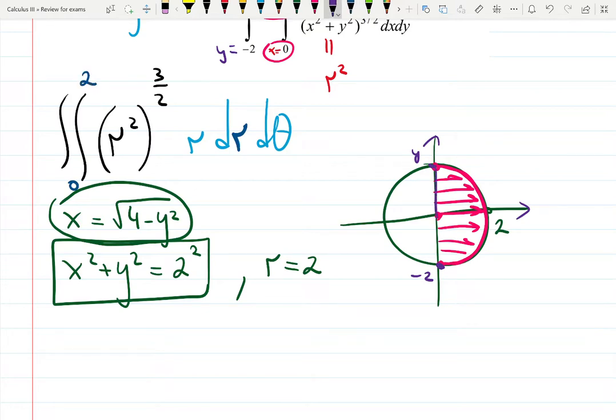Theta only performs half of the circular rotation from minus pi over 2 to pi over 2. And the integral is ready.